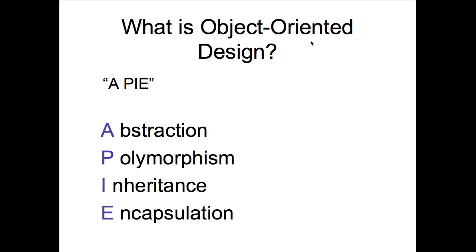To conclude this introduction, the way that I describe object orientation is I like to use the acronym APIE. You can see on your screen what it stands for — A-P-I-E. Each one of these areas is pretty much the basis of object orientation. We're going to start out talking first about the concept of abstraction — and this is the order I'm going to take this class through.